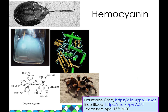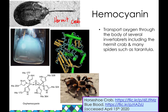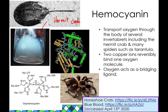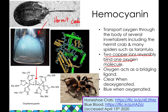Hemocyanin is worth mentioning. Hermit crabs and other invertebrates such as spiders use a different mechanism to transport oxygen called hemocyanin. In oxyhemocyanin, oxygen acts as a bridging ligand between two copper centers. Two copper ions reversibly bind one oxygen molecule. The blood is clear when deoxygenated and blue when oxygenated. Examples include hermit crabs, spiders, and scorpions.